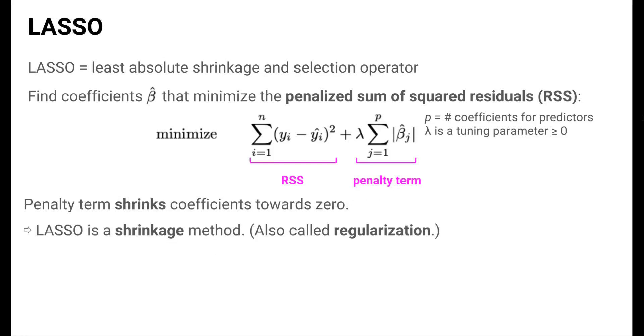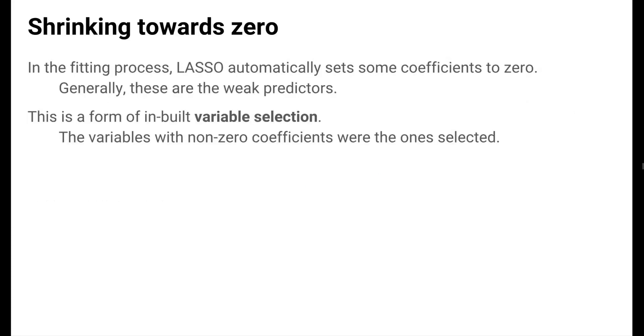Another way to describe what the penalty term is doing is that it shrinks coefficients towards zero, so that less of a penalty is incurred. This is why LASSO is called a shrinkage method. A synonym for this in statistics and machine learning is regularization. So the LASSO method is a shrinkage method in that it incentivizes the coefficients to be closer to zero. Also, because of the particular form of the penalty term being a sum of absolute values, LASSO is able to exactly set some coefficients to zero. This is a form of built-in variable selection. The variables that were selected to be in the model are the ones that did not have their coefficients set to zero during the fitting process.